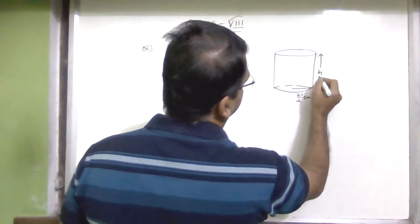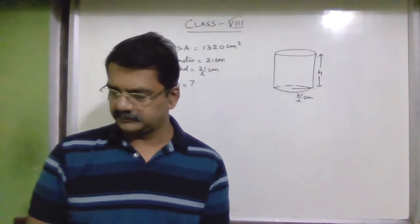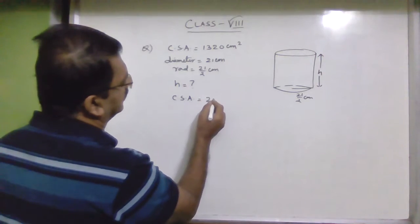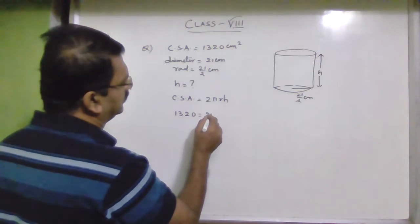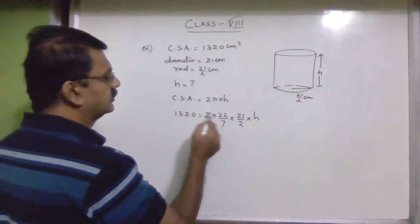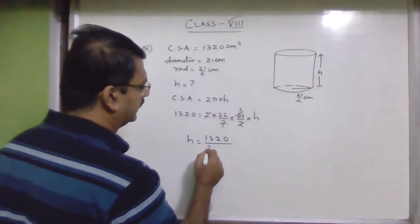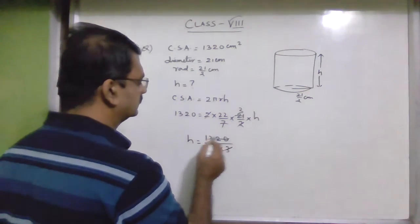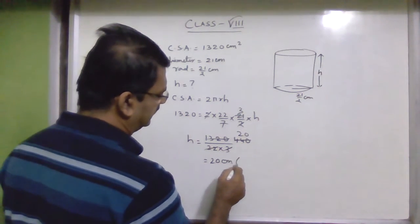The radius of the base is 21/2 centimeter, and let the height be h. The formula for curved surface area of a right circular cylinder is 2πrh. So 1320 = 2 × (22/7) × (21/2) × h. Cancelling: h = 1320/(22 × 3) = 20 centimeter. So the height of the cylinder is 20 centimeter.